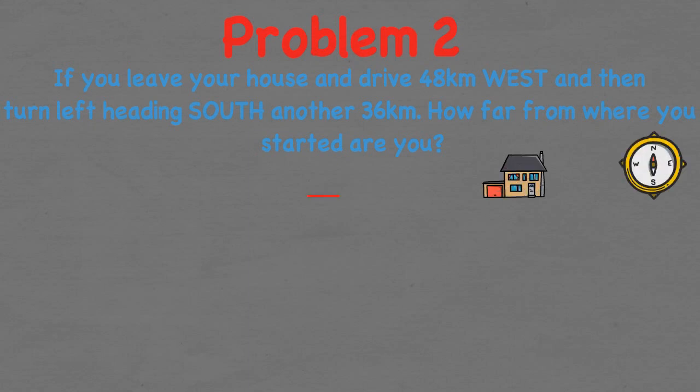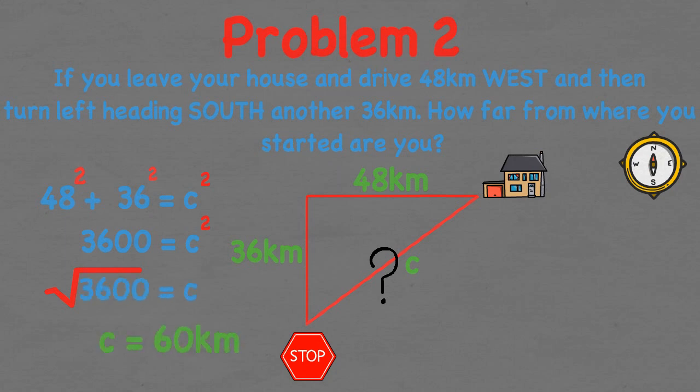Let's first start by drawing out the triangle. So you leave your house and drive west 48 kilometres. You then turn left heading south for 36 kilometres. Now we want to find the distance between where you stopped and your house. If we go back to the formula we can substitute 48 into A, 36 into B and we need to find C. So we are left with 48 squared plus 36 squared equals C squared. If we expand the equation we are left with 3600 equals C squared. We square root each side which leaves us with 60. Therefore you are 60 kilometres from your house.